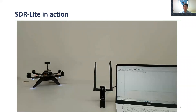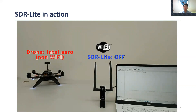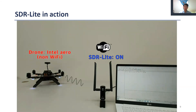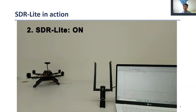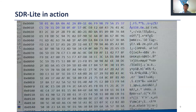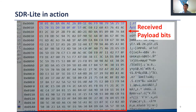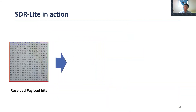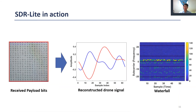Now let me show you how SDR Lite works in action. In this video, we use a drone as an ambient signal source. We first turn off SDR Lite — when it is off, obviously no packets are received. Next, we turn on SDR Lite. When turned on, it successfully receives packets which contain the drone signal. We can obtain the decoded bit stream data which follows the Wi-Fi standard, and using these received bits, we can reconstruct the drone signal and waterfall plot as shown.